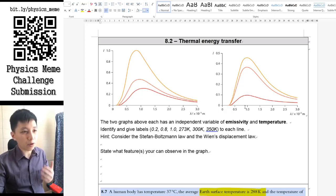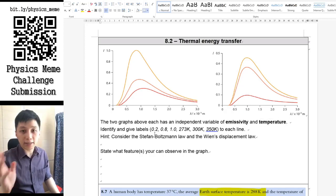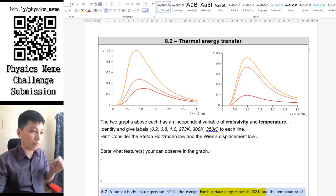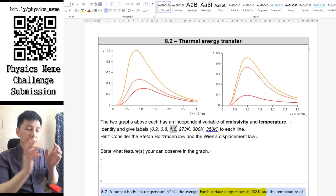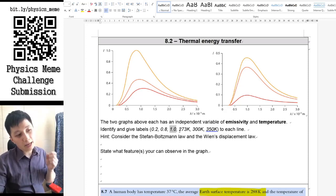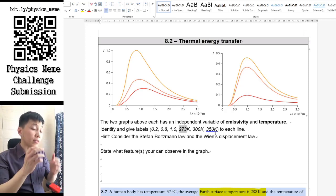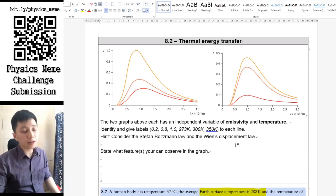For these six different bodies, they would have different emissivity or they may have different temperature. I would like you to identify, by using the two laws that we learned earlier, and label each of them, maybe 0.2, 0.8, and 1.0 for emissivity, or 273K, 300K, and 350K, which means they have different temperature but the same emissivity.